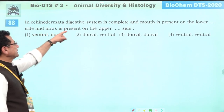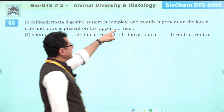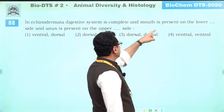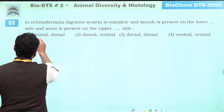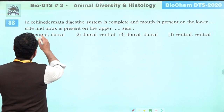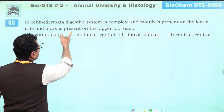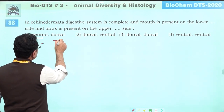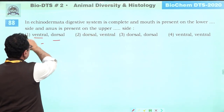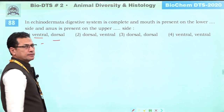In echinoderms the digestive system is complete. Mouth is present on the lower ventral side and anus is present on the upper dorsal side. First answer is correct.